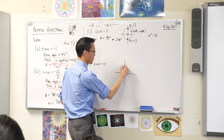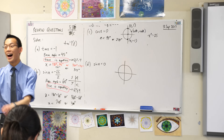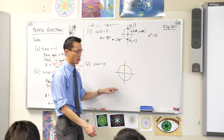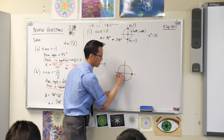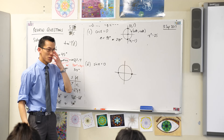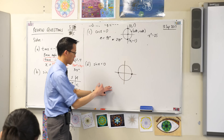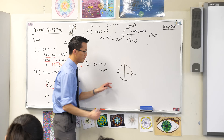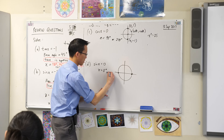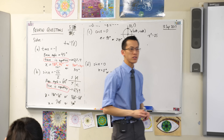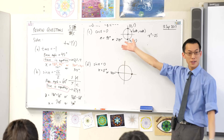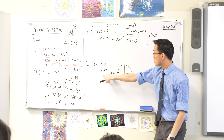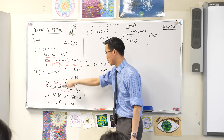Let's do the last one — draw another unit circle, just a little one. So sin x: sine is the y-coordinate. When is it 0? Here and here — do you agree? So what's the angle for this? The angle for this one is 0; this is the starting point. Now, notice that over and over again in solving these trigonometric equations we frequently get two solutions.